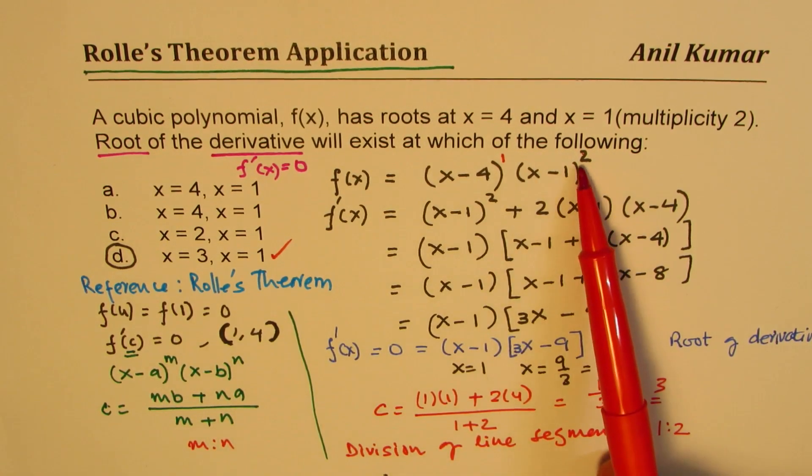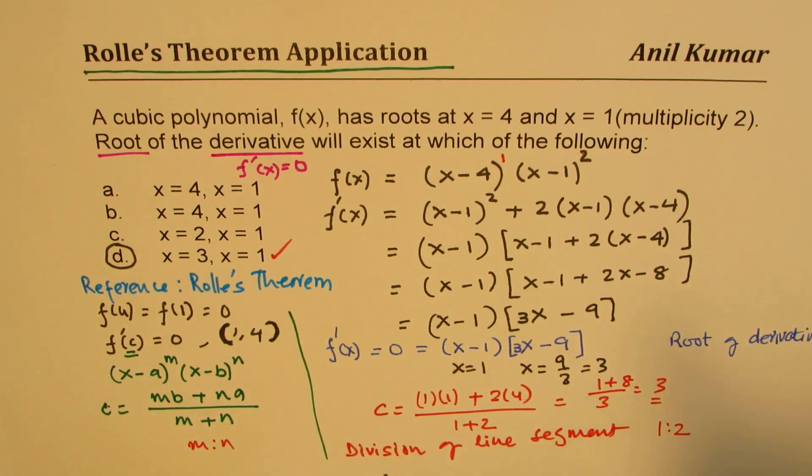So since this is a double 0, we know it is a turning point. So let me just sketch this function also just to help you understand.